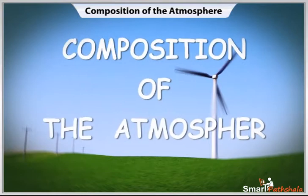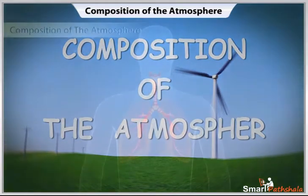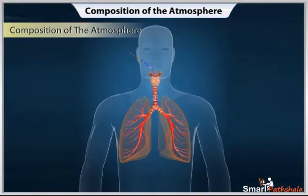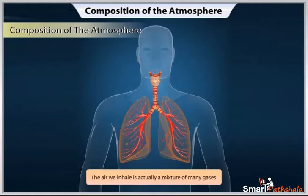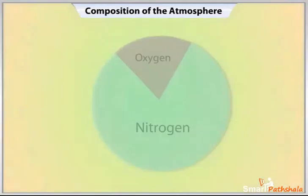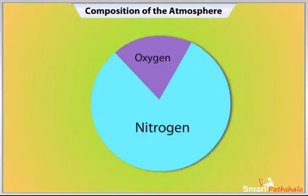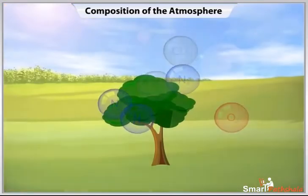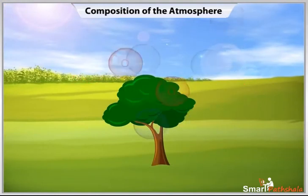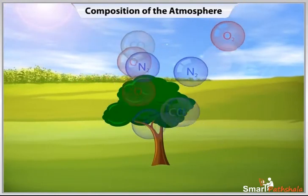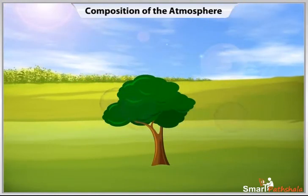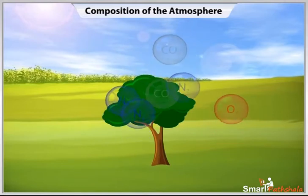Composition of the Atmosphere. Do you know that the air we inhale is actually a mixture of many gases? More than three quarters of the atmosphere is made up of Nitrogen. Oxygen is a little less than one quarter. Nitrogen and Oxygen are two gases which make up the bulk of the atmosphere. Together, these two gases make up approximately 99% of the dry atmosphere.